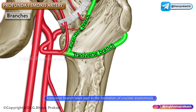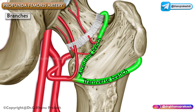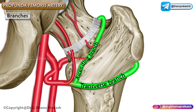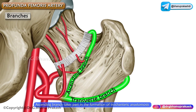The transverse branch takes part in the formation of the cruciate anastomosis — this is a very important MCQ point to remember. The ascending branch passes to the trochanteric fossa and takes part in the formation of the trochanteric anastomosis.